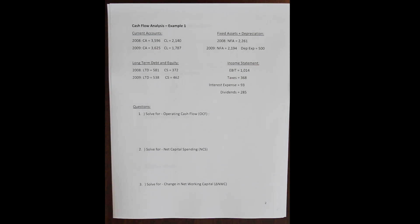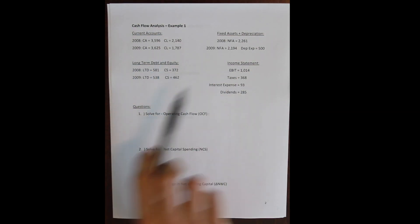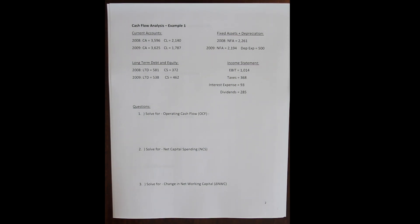Let's look at an example relevant to finance. We want to understand how to take financial statements — a simple balance sheet and income statement — and use that information to calculate what's called cash flow from assets, sometimes also called free cash flow.